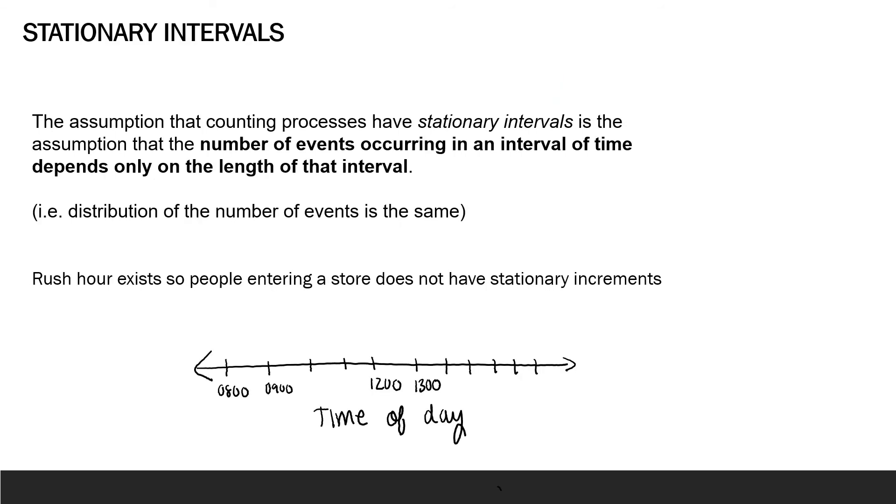So, now let's investigate another type of interval. The assumption that counting processes have stationary intervals is the assumption that the number of events occurring in an interval of time depends only on the length of that interval. Think of it like this. For any, say, five-hour interval or one-hour interval, the distribution of the number of events is the same. So, let's try and visualize this through our store example. Let's say rush hours just don't exist. Then it would be reasonable to assume that the likelihood of people entering the store from 0800 to 0900 is the same as the likelihood of people entering between 1200 and 1300 or even 1400 to 1500. This is because these time intervals have the same length. They are just one hour long. But again, since rush hour does exist, this seems a little bit silly. So, our store example does not have stationary increments.